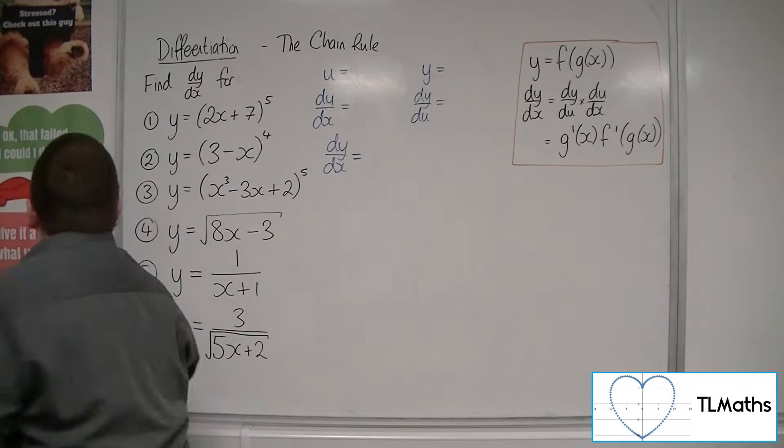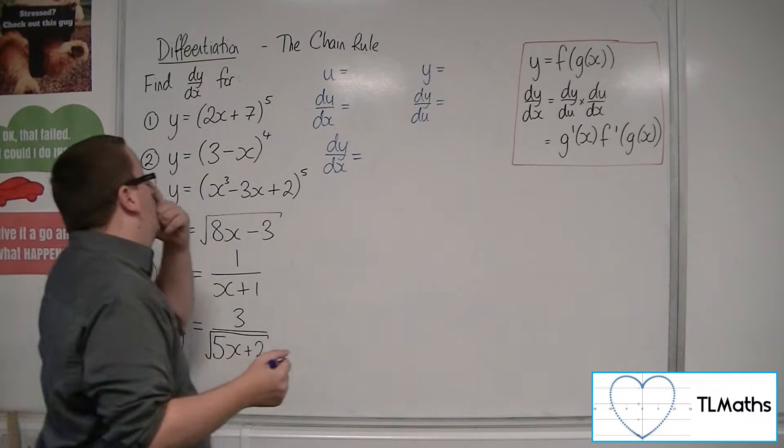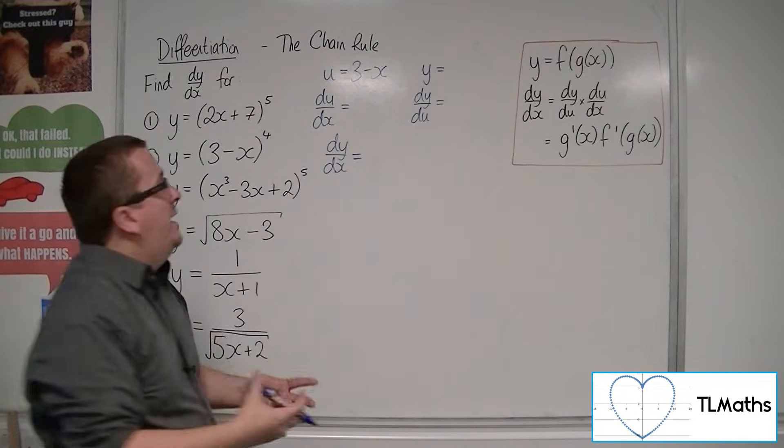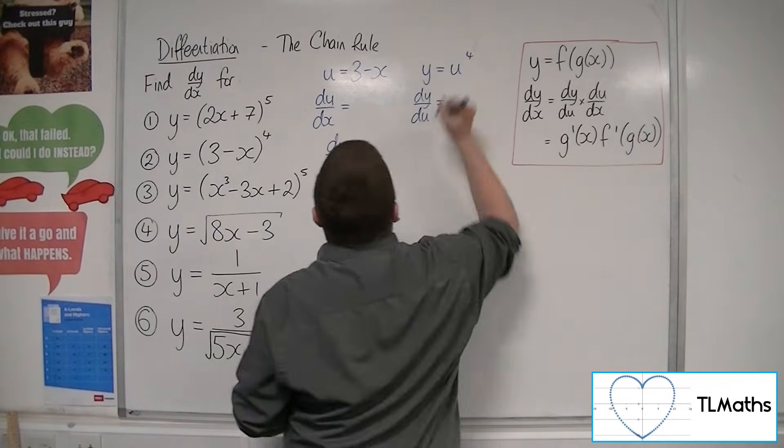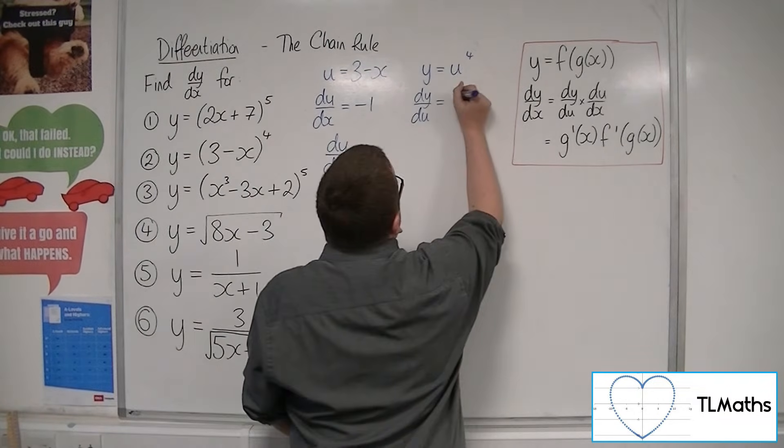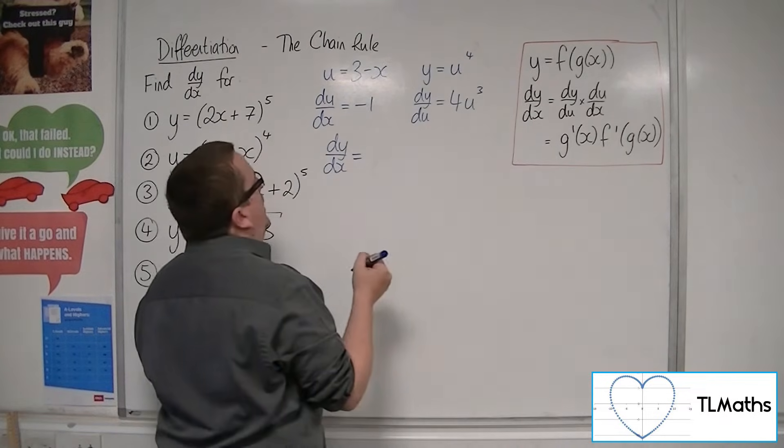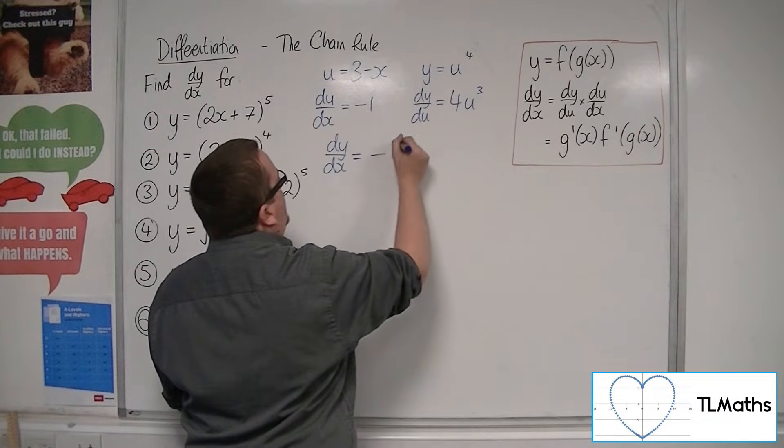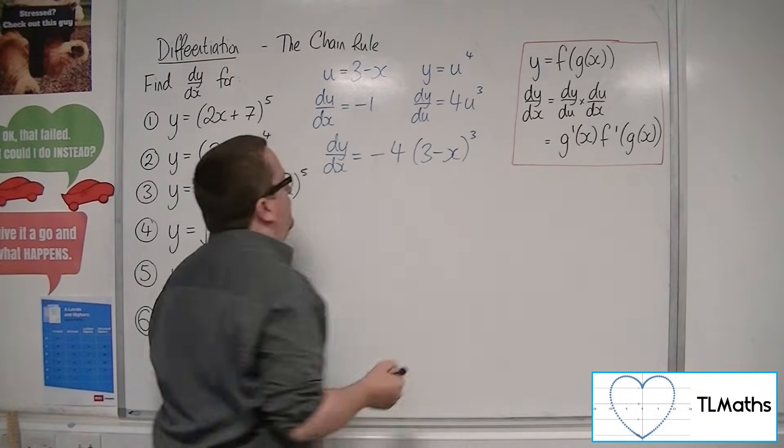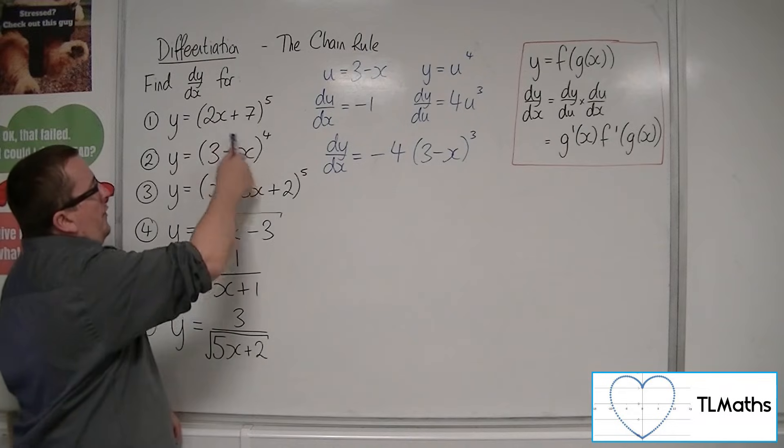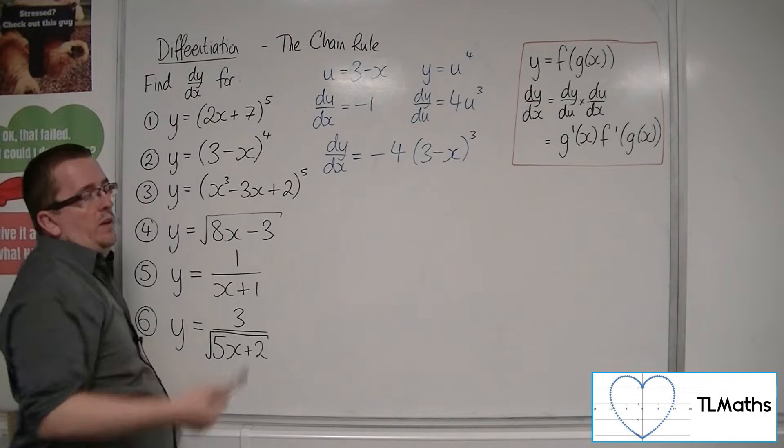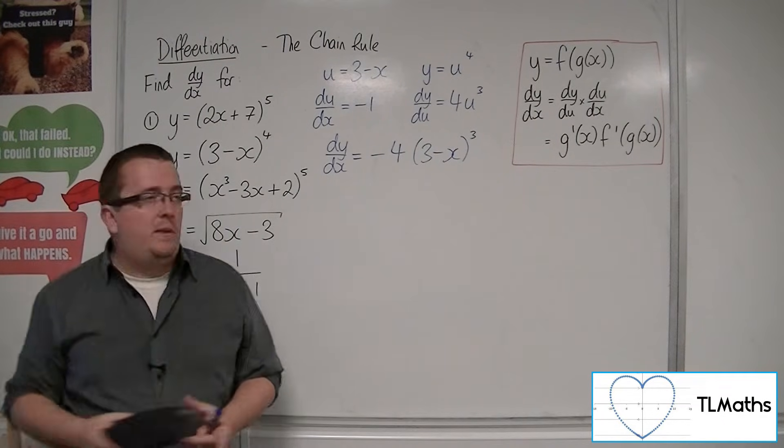So number 2, we've got 3 minus x to the power of 4. So the u is the 3 minus x, the bit that's inside the bracket. And the y must then be u to the power of 4. So the derivative of what's inside, minus 1, comes outside. The 4 comes down to the front and you take 1 off the power. Same process each time.